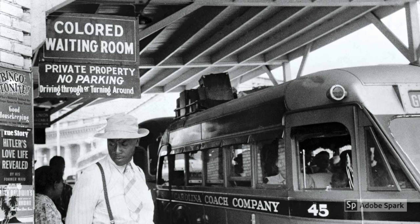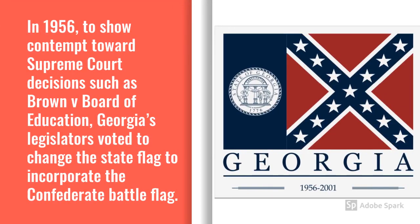Segregationist politicians wanted to continue Jim Crow laws in the state. They were not happy upon hearing the court's 9 to nothing decision that racial segregation violated the 14th Amendment, and they were determined that Georgia schools would not integrate. In 1956, to show contempt towards Supreme Court decisions such as Brown v. Board of Education, Georgia's legislators voted to change the state flag to incorporate the Confederate battle flag. The state constitution provided the legislature the sole authority to change the flag, so no public referendum was necessary to make the change. While legislators denied that the change in flag design was an overt display of opposition to segregation, the new flag design was almost certainly racially motivated.